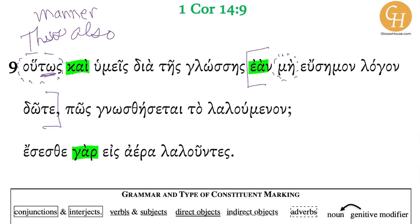And then we have a me, which negates the subjunctive mood here. Now let's keep working through the sentence. I see a humeis, which is the express subject. It is violating word order, because typically the word order is verb-subject-object — VSO. But when you have the subject pulled out in front, there's something going on. And in fact, this is proleptic.